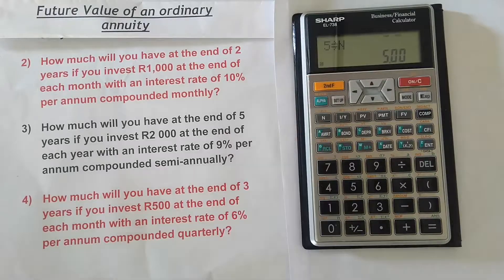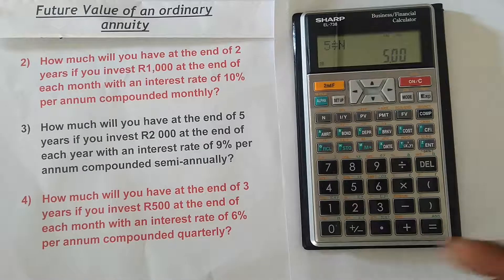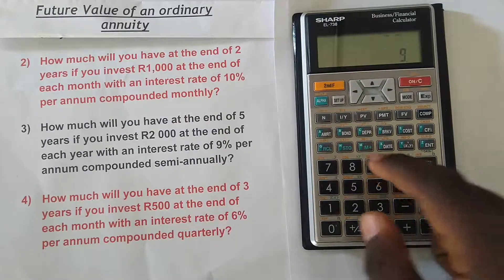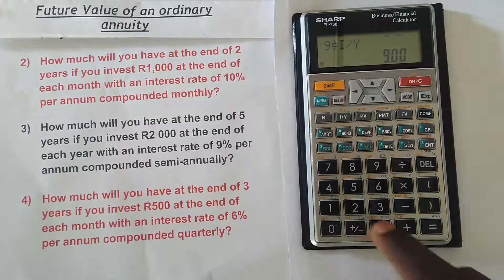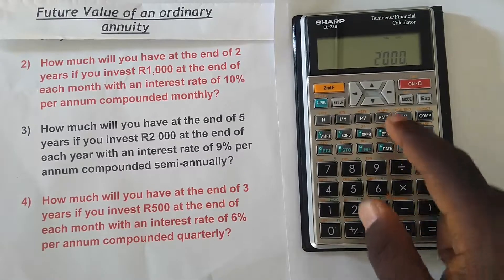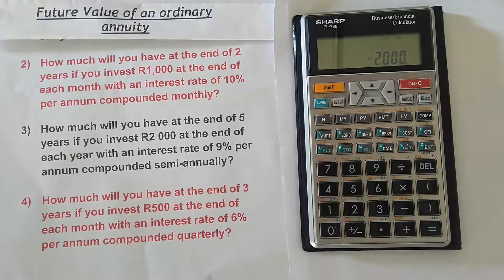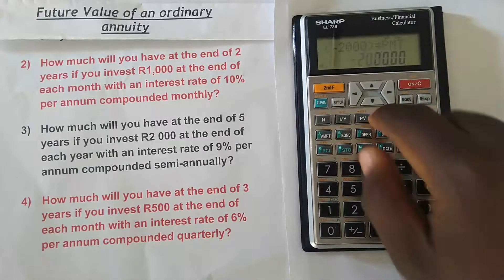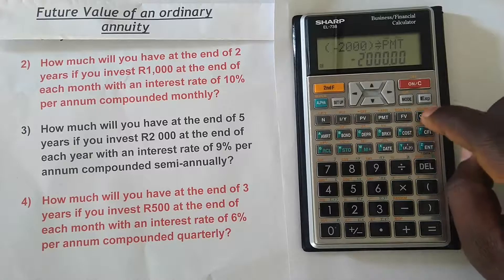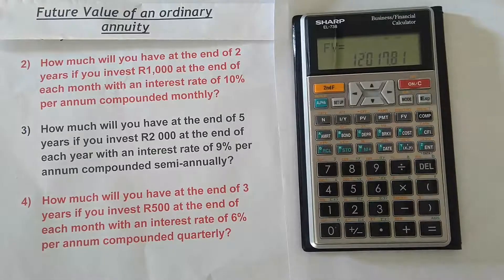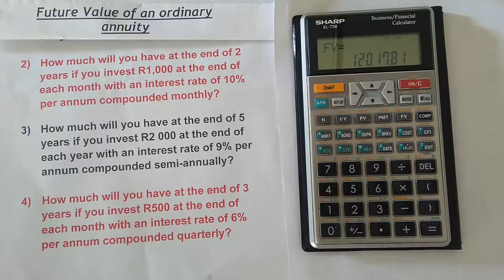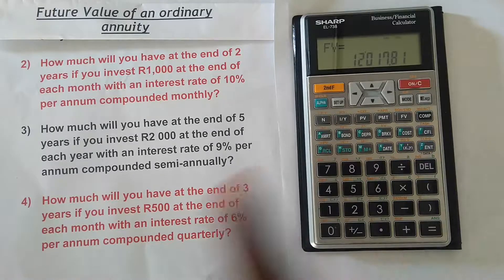Press ON/C to clear the screen. It's for five years, so press 5 then N. Since payments occur each year, you don't need to press second function and N, but you can and it gives the same result. The interest rate is 9, so press 9 then I/Y. The payment is R2,000: press 2000, plus/minus, then PMT. Press COMP then FV — the future value is R12,017.81 if you invest R2,000 at the end of each year for five years at 9 percent compounded semi-annually.